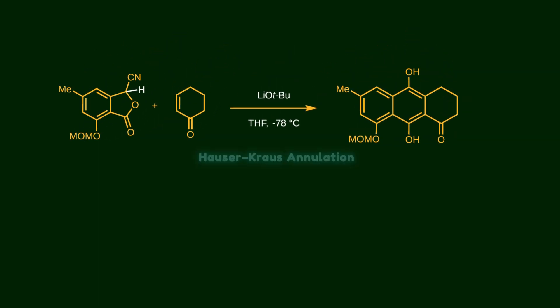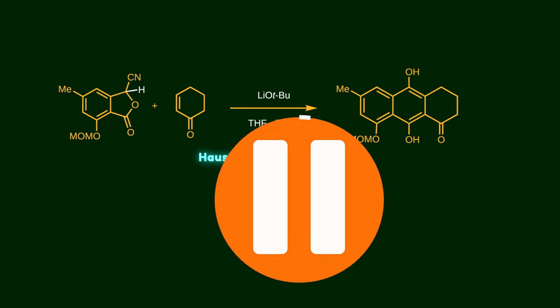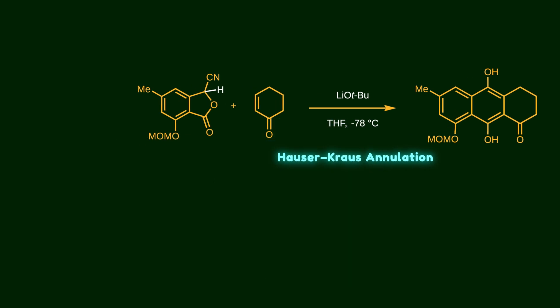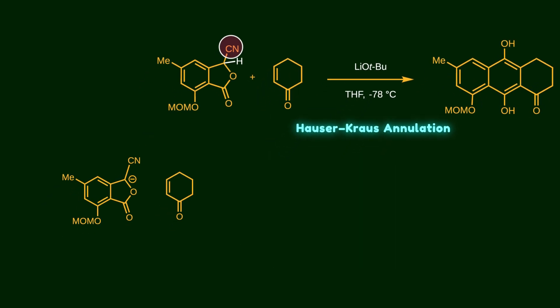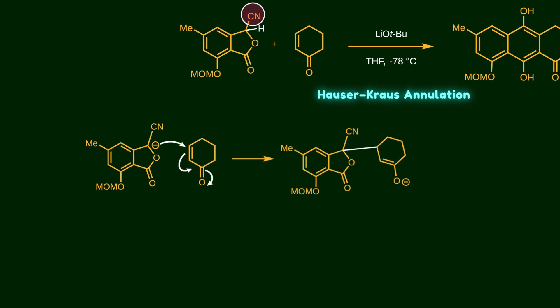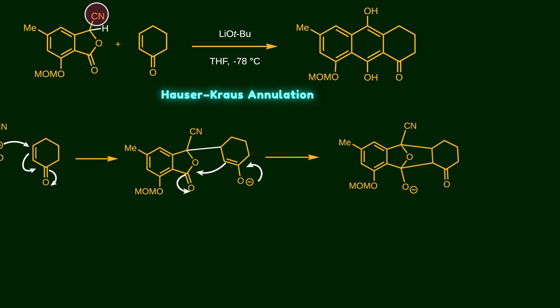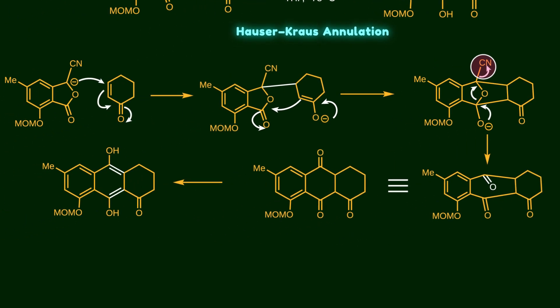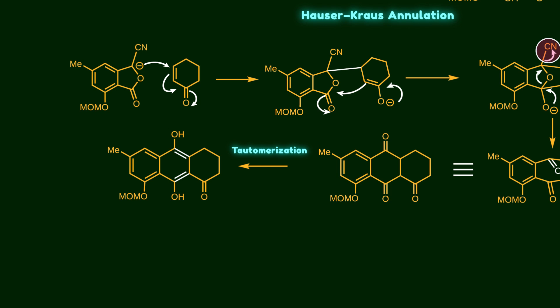The tricyclic ring is then produced by the Hauser-Kraus annulation. The cyanophthalide reacts with cyclohexanone — this reaction has a beautiful mechanism. The proton alpha to the cyanide is acidic because the electron-withdrawing cyanide group stabilizes the negative charge. It then attacks the beta position of cyclohexanone, which is the Michael acceptor. The resulting enolate attacks the carbonyl group to create an unstable bridged structure. After that, the negative charge moves back to the carbon atom, leading to rupture of the carbon-oxygen bond and formation of another carbonyl group. At the same time, the cyanide group leaves the molecule, and the tricyclic skeleton is formed. When it undergoes tautomerization, the carbonyl groups are converted to hydroxyl groups to extend the length of conjugation.